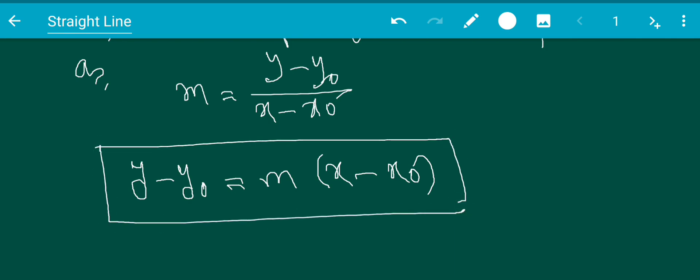This is called point-slope form. In the next video we will discuss the other forms one by one.